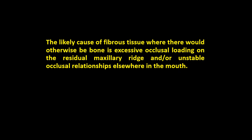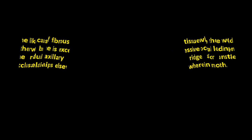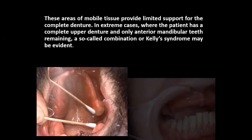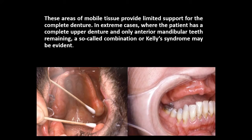The most likely cause of fibrous tissue is excessive occlusal load, or it could be due to an unstable occlusal relationship elsewhere in the mouth. In extreme cases, the patient has a complete upper denture against mandibular natural teeth, and this phenomenon or syndrome is called Kelly syndrome.